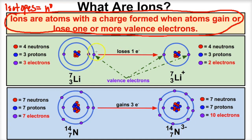Keep in mind, from an earlier video, we learned that electrons have a negative charge. So if you lose something negative, you become more positive. And if you gain something negative, you become more negative. So ions are atoms with a charge formed when that atom either loses or gains one or more electrons.